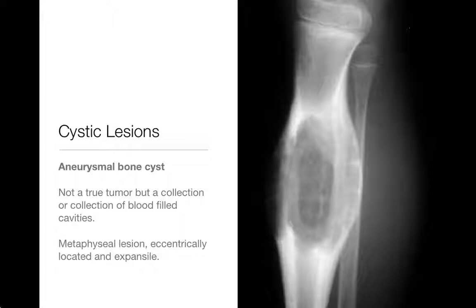Typically, aneurysmal bone cysts originate in the metaphysis and are eccentrically located, though by the time you see them they may be so expansile that you will no longer be able to tell it was once eccentrically located. These will continue to grow and expand, and so are treated, because they just won't go away.